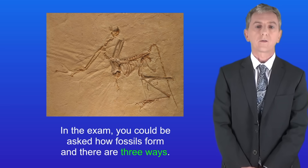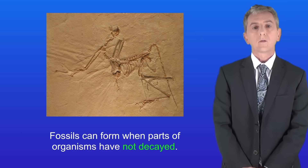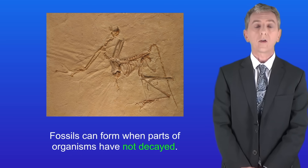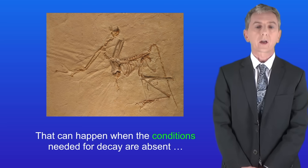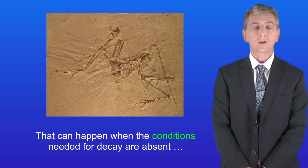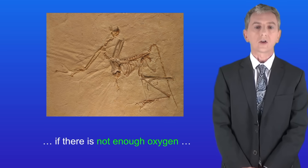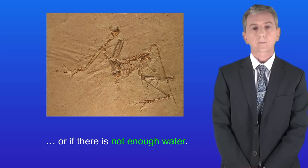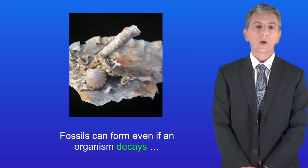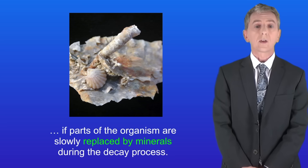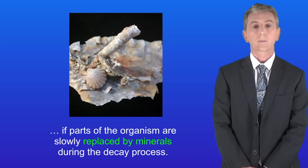In the exam you could be asked how fossils form and there are three ways. Firstly, fossils can form when parts of organisms have not decayed. That can happen when the conditions needed for decay are absent — for example if the temperature is too cold, if there's not enough oxygen, or if there's not enough water. Secondly, fossils can form even if an organism decays, if parts of the organism are slowly replaced by minerals during the decay process.